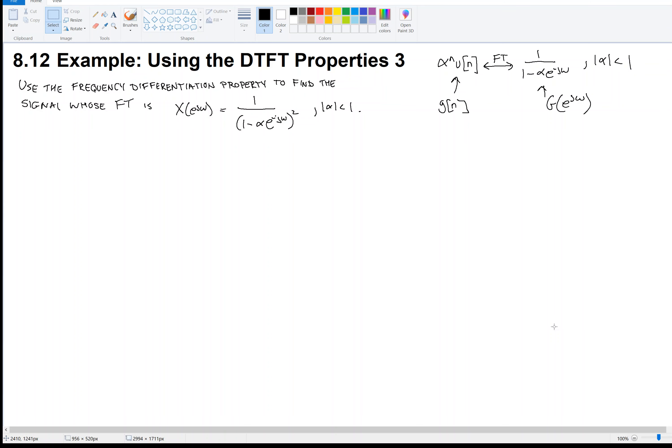Hi, we are working on applying the discrete time Fourier transform properties. In this example, we're going to use the frequency differentiation property to find the signal x[n], whose Fourier transform is this thing, where the magnitude of alpha, a constant, is less than 1.